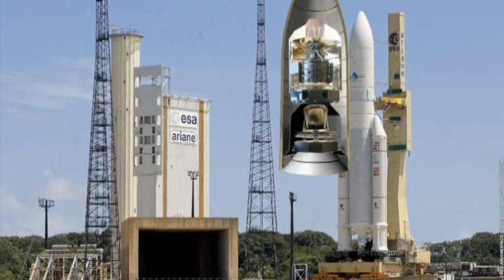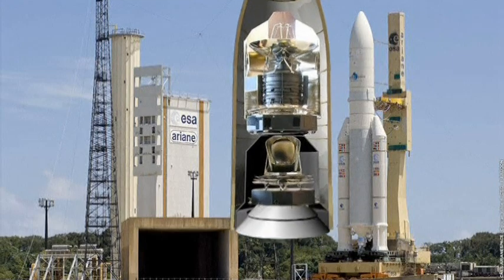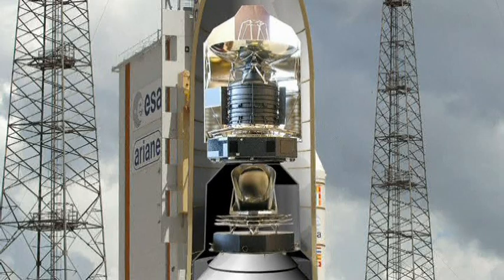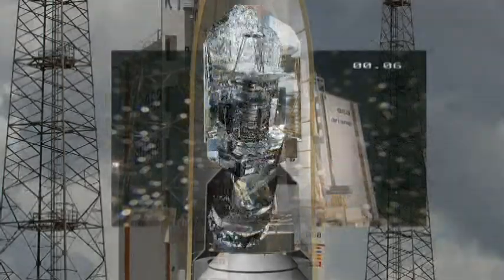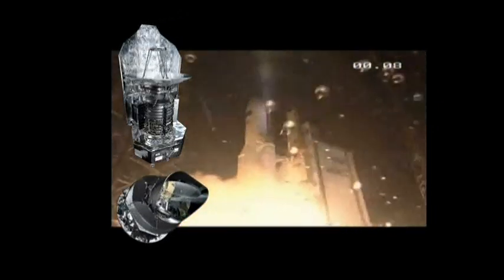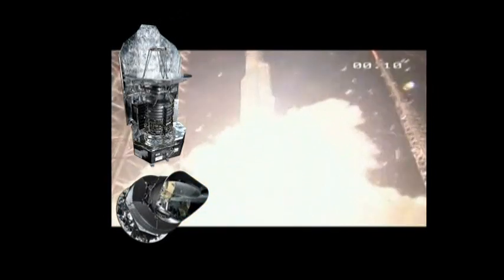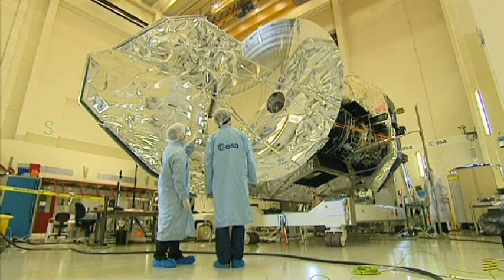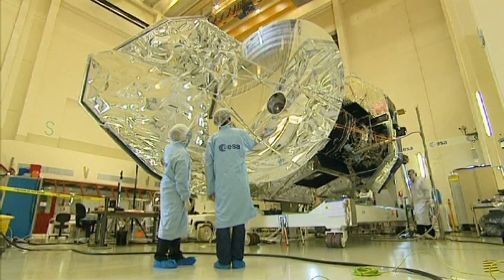The two observatories paired under the Ariane fairing together constitute a joint program that has taken over ten years to develop. It is the most valuable space science payload that Europe will have ever launched. Riding at the summit is Herschel, at over seven metres in height, the biggest of the two spacecraft.